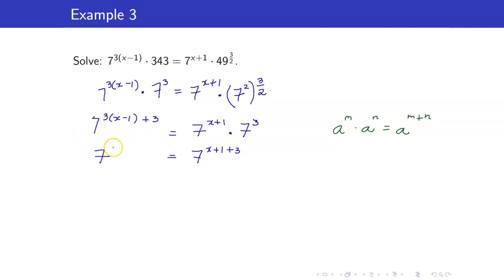This is 3x minus 3 plus 3. So, we have 7 raised to 3x is equal to 7 raised to x plus 4. I have the same base 7, so therefore, we can now equate our exponents. 3x is equal to x plus 4, and therefore, collecting all the x's, we get that 2x is equal to 4 or x is equal to 2.